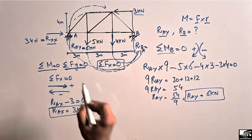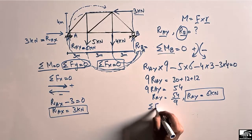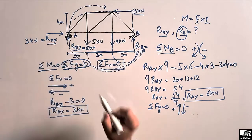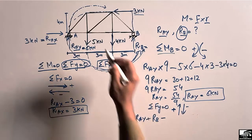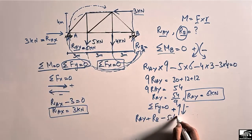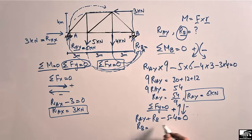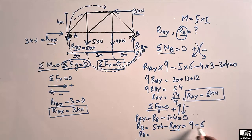To find R_B, we now use the vertical force equilibrium equation, since only one unknown remains. Taking upward forces as positive and downward as negative: R_AY plus R_B minus 5 minus 4 equals zero. So R_B equals 5 plus 4 minus R_AY, which is 9 minus 6, giving R_B equals 3 kN acting upward.